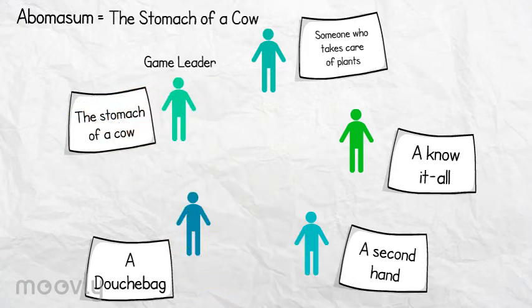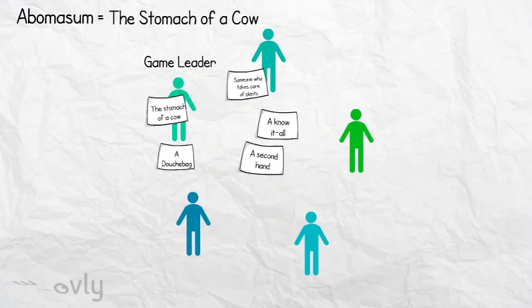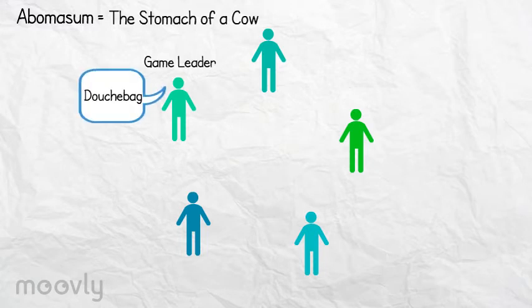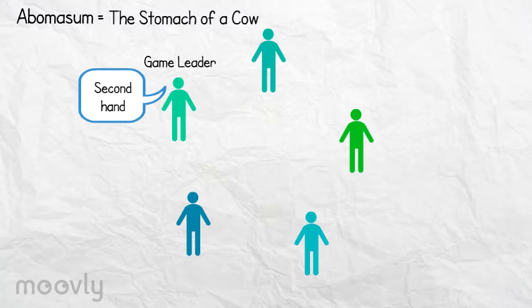Next, the game leader collects all the papers and calls out all the meanings in a random order, including the real one he wrote down himself: a douchebag, a s***, a know-it-all, the stomach of a cow, a second hand, and someone who takes care of plants.